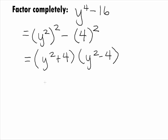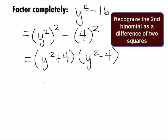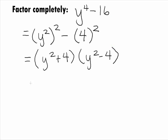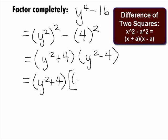Next, we want to assess to see if there is anything else that we can factor. Note how the second binomial is another difference of 2 squares. That means we have to continue factoring this problem. Keeping the first binomial the same, we have y squared plus 4, and we can rewrite the second binomial as a base of y being squared, minus a base of 2 being squared.